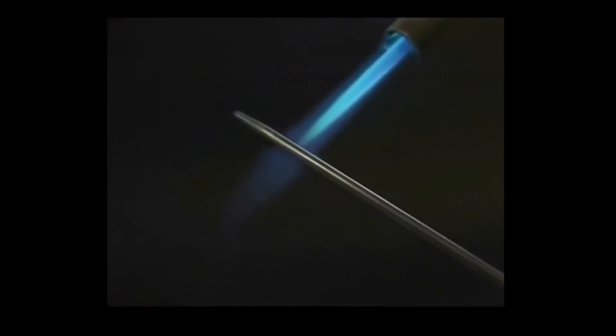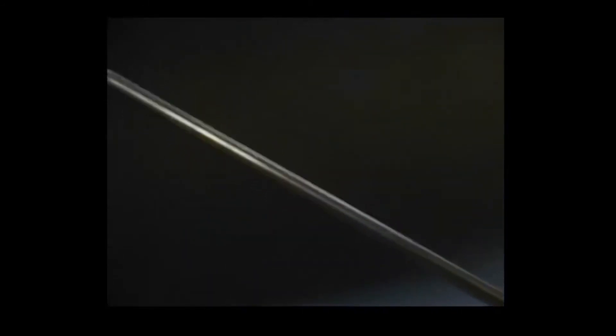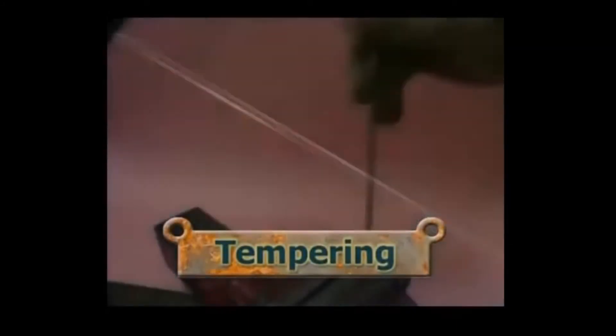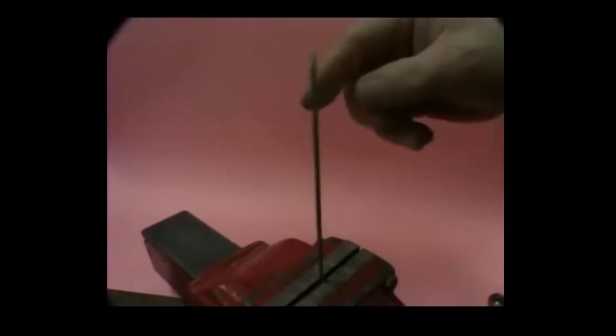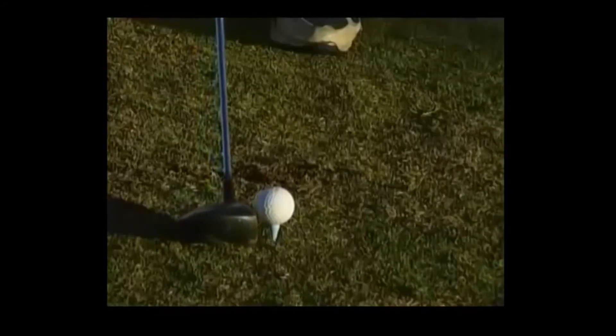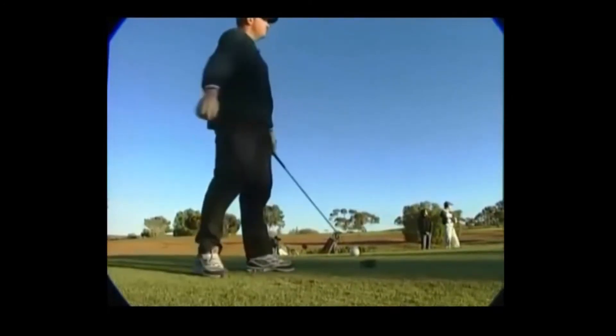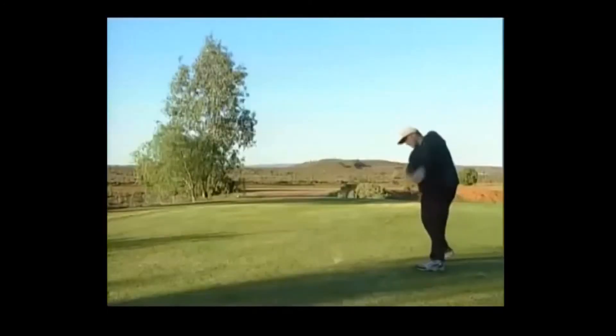This needle was also quenched. Now we'll heat it moderately until it just begins to change color, then let it cool slowly. This process is called tempering. Tempering removes brittleness while retaining the hardness required in the material. These golf clubs have been tempered to reduce brittleness but retain the other qualities of the steel.